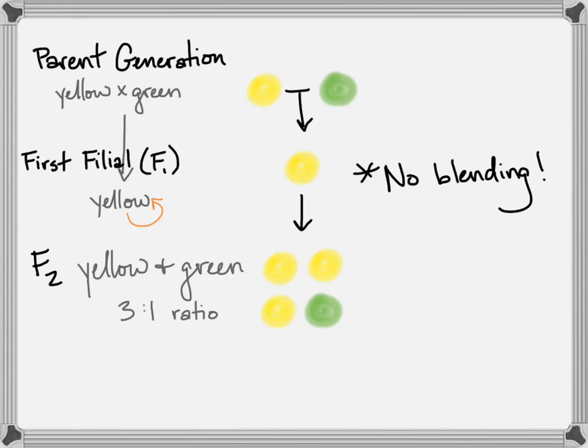To be exact, he counted thousands of peas. It was 6,022 yellow peas and 2,001 green peas. This was amazing to him. The fact that a trait could disappear, and not blend, and then come back, was very supportive of the particulate theory, and he saw this in many traits. The flowers, the height of the plants, the pea color, the pea texture. He was seeing it over and over again.